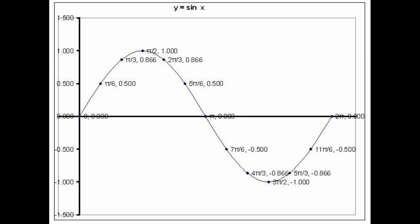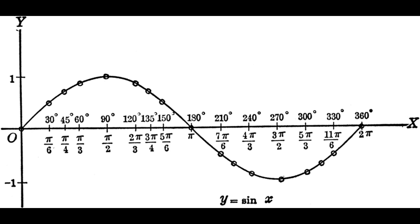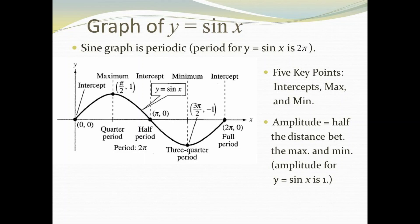If we graph y equal to sin x by plotting the given points, going from 0 to 2π, the function starts at 0, rises to 1 at π/2, goes back to 0 at π, then goes from 0 to −1 at 3π/2, and back to 0 at 2π — at which point the sin values repeat. The period of the sin function is 2π. To draw a more complete graph, we repeat this period in each direction. This graph indicates the quarter period, half period, three-quarter period, and full period — one complete cycle.